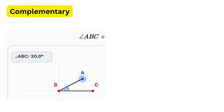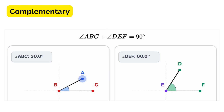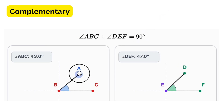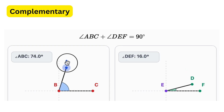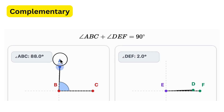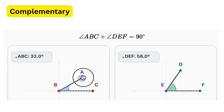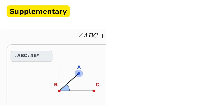First are complementary and supplementary angles. Complementary angles are two angles whose sum is exactly 90 degrees. They don't have to be next to each other, but their sum must equal a right angle. For example, if one angle is 30 degrees and the other is 60 degrees, together they make 90 degrees — they are complementary. As soon as you change one, the other changes automatically so the sum is always 90 degrees.